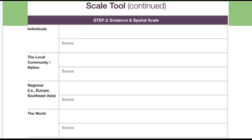Our focus right now is the Scale Tool, Step 2. We're going to look at the evidence and the spatial scale, meaning we look at which individuals were involved, which people are involved. It's all going to be from the same source when I model it for you. That source is going to be from the autobiography of Paul Rusesabagina, and then the local community, the nation, the region, and then the world. Let's look at this — we're going to try this with Paul Rusesabagina's autobiography, a piece from that. Then we're going to see if you can work with a piece on your own.